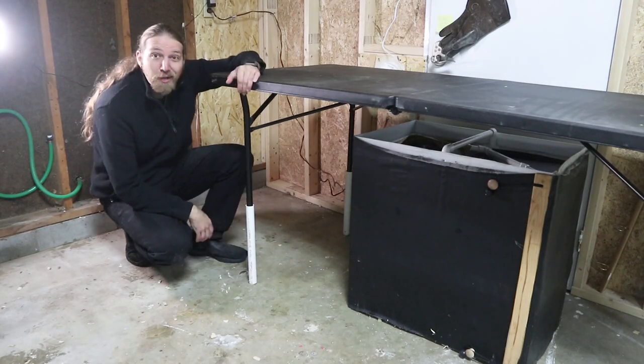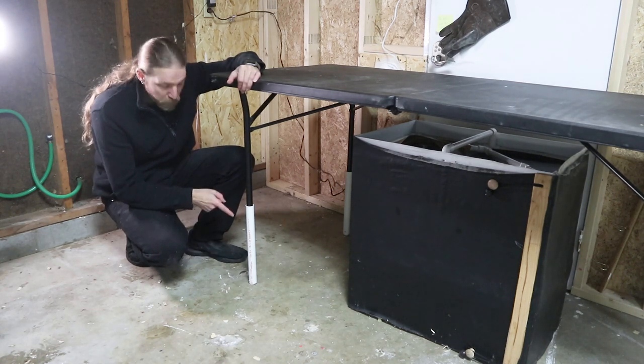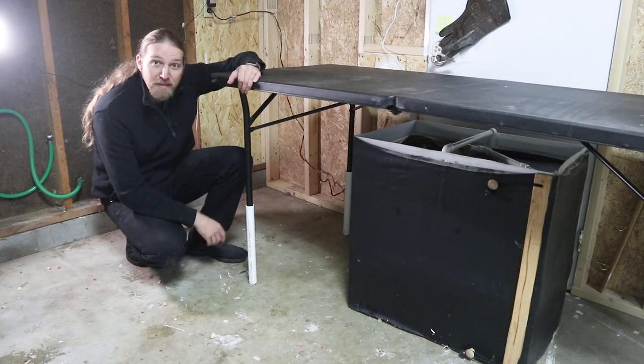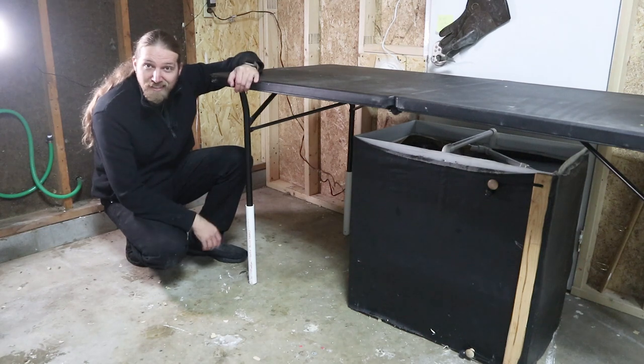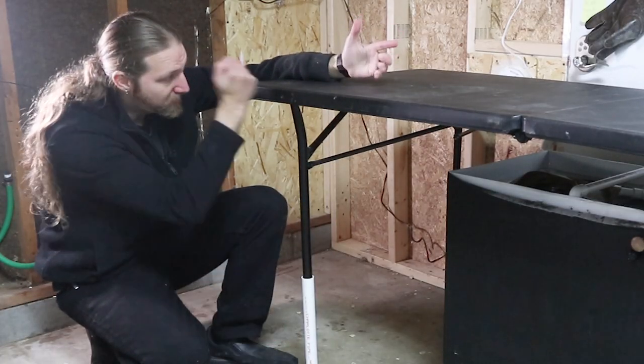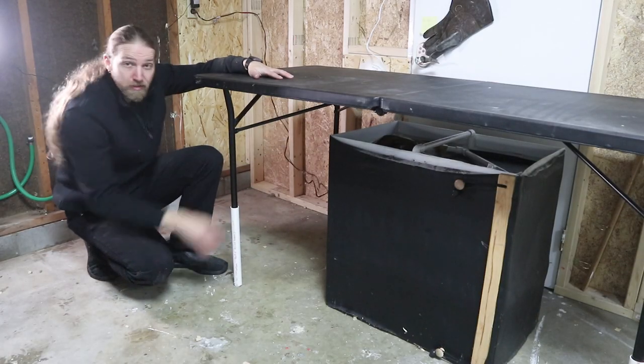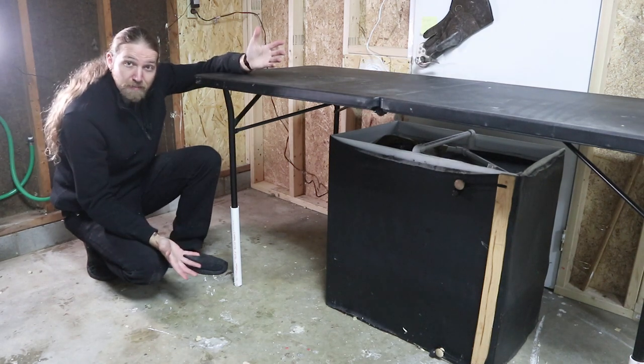Well there we go, super easy, super quick table leg extensions made from just two pieces of PVC and a screw and some tape and some foam. But really, how long did that take? Five minutes, less. It's just a great way to get even more versatility out of these fold away tables and now it's plenty tall enough to fit all kinds of taller things underneath of it and it's more appropriate for a taller person like myself to stand at.